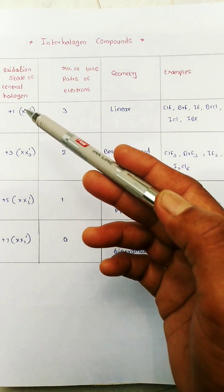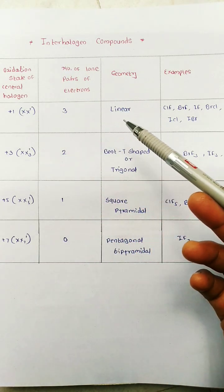Interhalogen compounds. See here their oxidation state, number of lone pair, geometry and example.